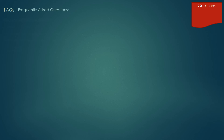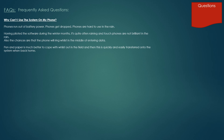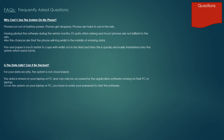A couple of frequently asked questions. Why can't I use the system on my phone? Well, phones run out of battery power, phones can get dropped, and phones are hard to use in the rain. Having piloted the software during the winter months, it's quite often raining, and touch phones are not brilliant in the rain. The chances are that the phone will ring whilst you're in the middle of entering data. Pen and paper is much better to cope with whilst out in the field, and this is quickly and easily transferred into the system when back home.